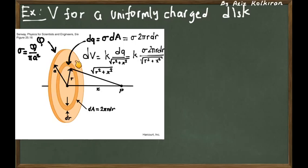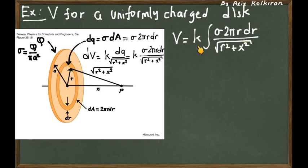And to find the total potential, then we have to integrate this dV from r changing from 0 to small a, which is the radius of the disk. So let's write this down. And here r is the radius of these rings, and these are changing from 0 to the total radius of the disk.